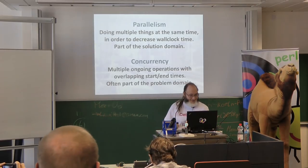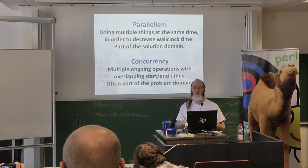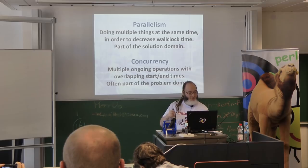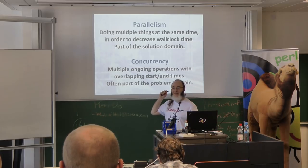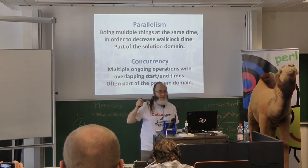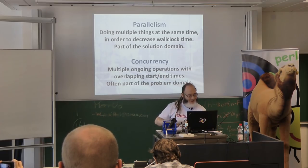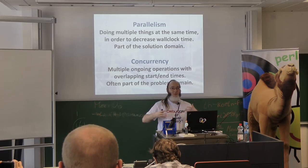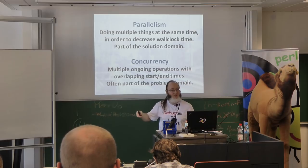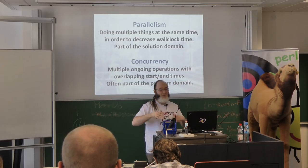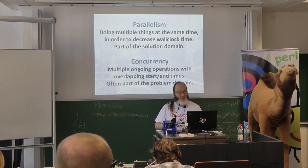Before we dig into this, let's try and get a little bit of precision into our language. Parallelism is where we do multiple things at the same time in an effort to decrease the wall clock time — that is the amount of time measured by a clock on the wall — the idea being that we solve the problem faster. Not necessarily with less CPU resources; generally we pay a bit of overhead, but we end up with a result to present to our users faster. So that's a win.